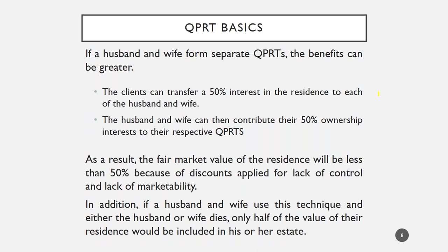One other thing to note — not mentioned in the slides — is that you need to be careful of the reciprocal trust doctrine. A husband cannot create a QPRT for wife and children while wife simultaneously creates a QPRT for husband and children. The IRS will unwind that and include the assets of each QPRT in the respective spouse's estate. The way around it is to have husband create a QPRT for the benefit of wife and descendants, and wife create a QPRT just for the benefit of descendants, which avoids the reciprocal trust doctrine.